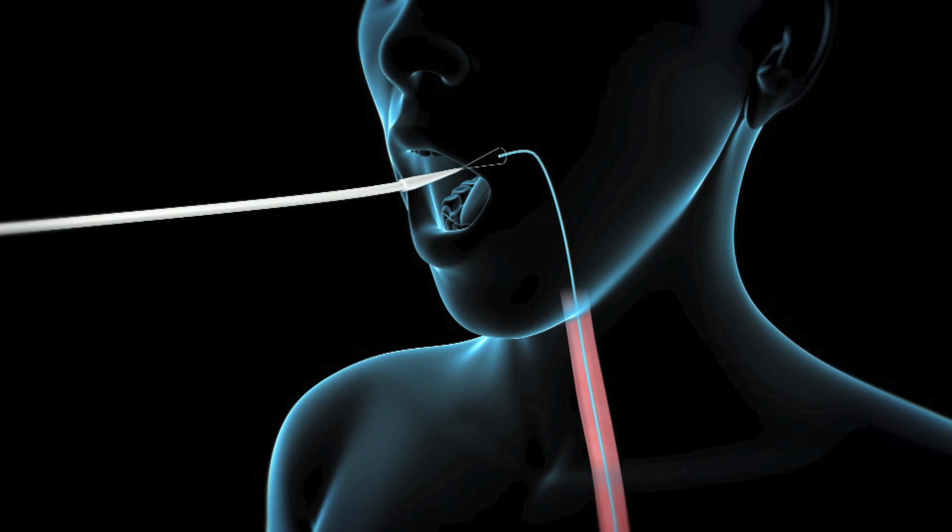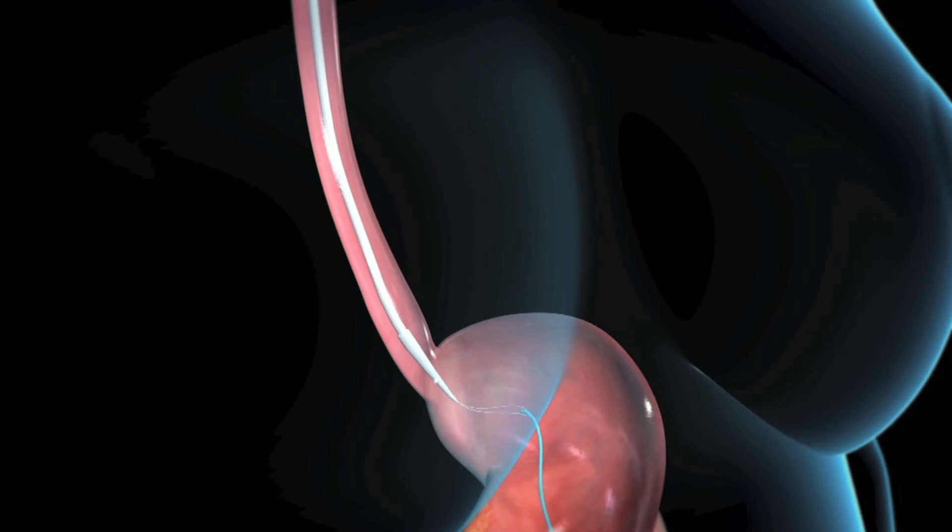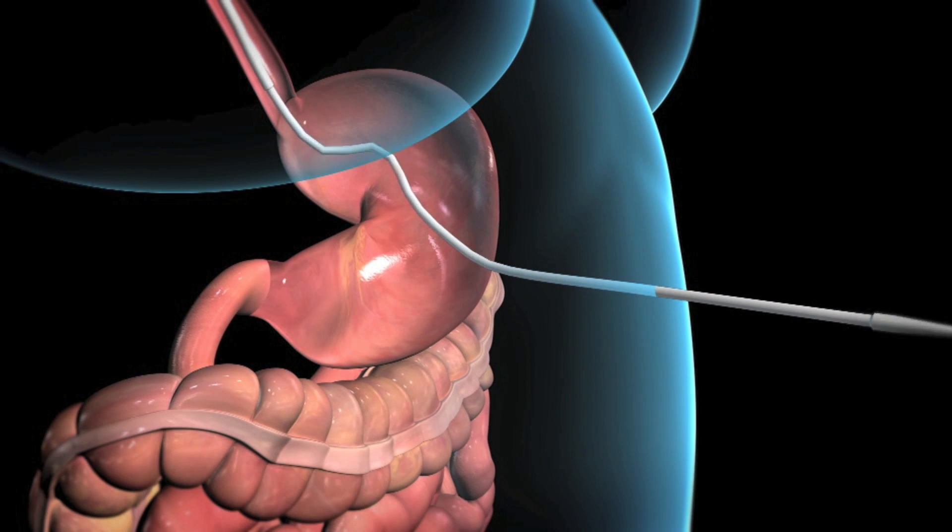Your doctor will attach the A tube to the wire outside of your mouth. By gently tugging on the other end of the wire, he or she will pull the tube back through your mouth and esophagus and into your stomach.